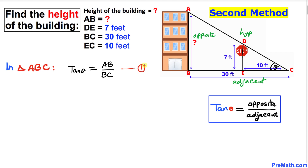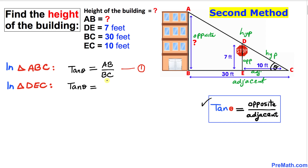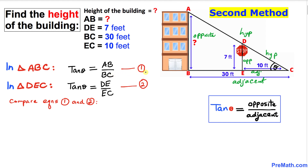Now let's focus on the smaller right triangle DEC. Angle theta appears here as well. Side EC is the adjacent side, DE is the opposite side, and DC is the hypotenuse. Applying the same ratio, tangent of theta equals DE over EC. This is equation two.